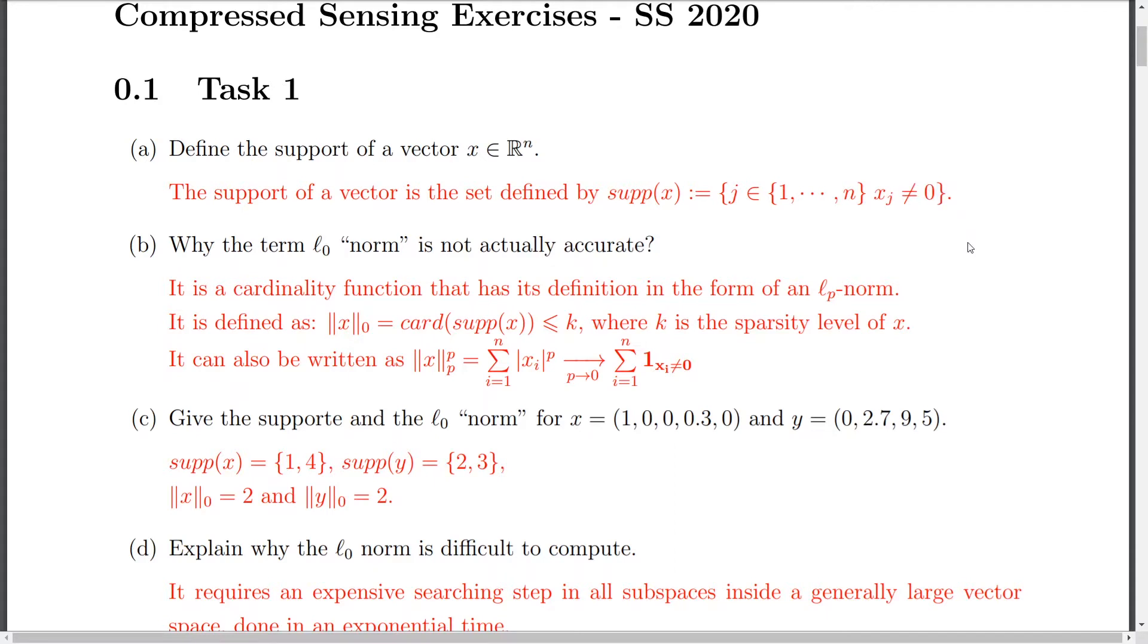So next, why actually the term L0 is not actually accurate. And I think I covered this well in the lecture's part. But nevertheless, it's nice to remind that it's actually a cardinality function that has its definition in the form of an LP norm, where here the p is nothing than a zero. And of course, remember that for p varying from zero to values close to one, we don't actually have the notion of norm.